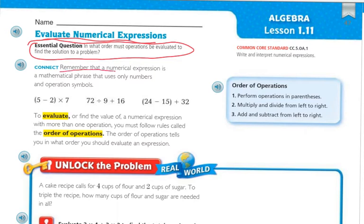A numerical expression is a mathematical phrase that uses only numbers and operation symbols. For example: parentheses 5 minus 2, parentheses times 7. Or 72 divided by 9 plus 16. Or parentheses 24 minus 15, parentheses plus 32.